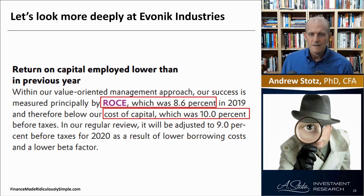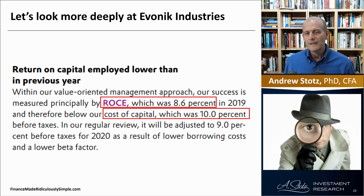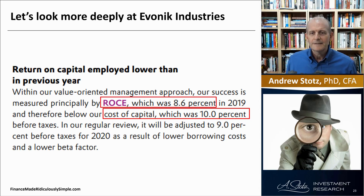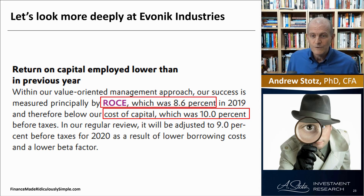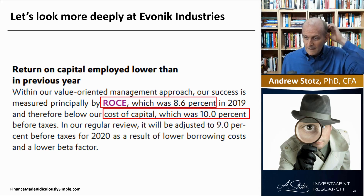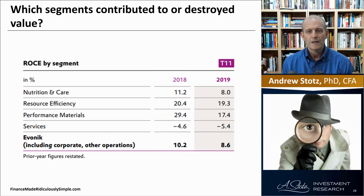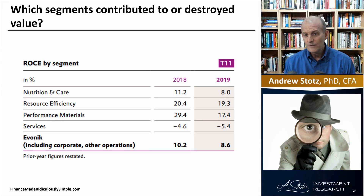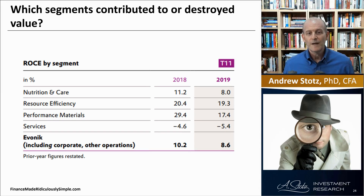Here's an excerpt from Evonik Industries' financial statements. Their ROIC — which they call ROCE, or return on capital employed — was 8.6% in 2019, below their cost of capital of 10%, meaning the company wasn't overcoming its hurdle rate. Looking at which segments contributed to or destroyed value, in 2019 the services sector seemed to be destroying value, while resource efficiency and performance materials were creating the most value.